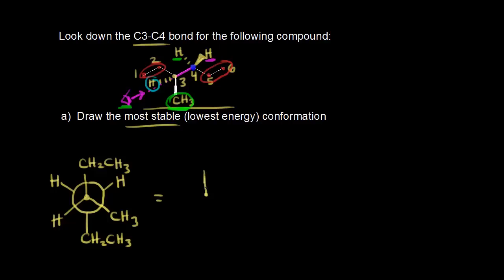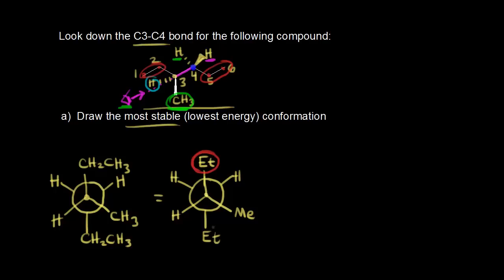Let's redraw this Newman projection using abbreviations. CH2-CH3 is an ethyl group, so let's abbreviate that as Et, and a methyl group as Me. For the back carbon, we have a hydrogen, a hydrogen, and an ethyl group going straight down. In the video, I'm going to make an ethyl group red and the methyl group blue, so it's easier to show different conformations. From the video, we're going to figure out the most stable conformation, which must be a staggered conformation.